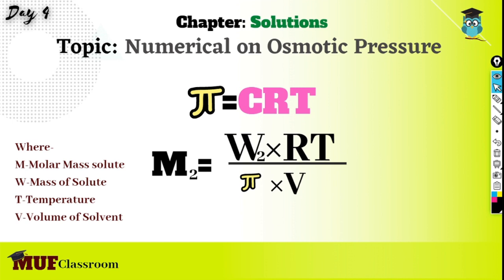And from Van't Hoff's combined law, we got the final equation, that is π = CRT.